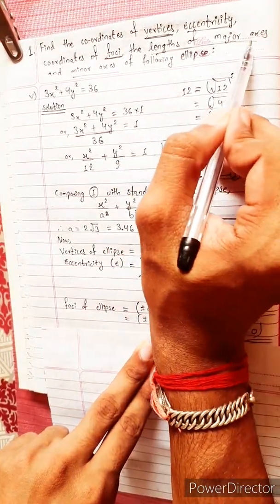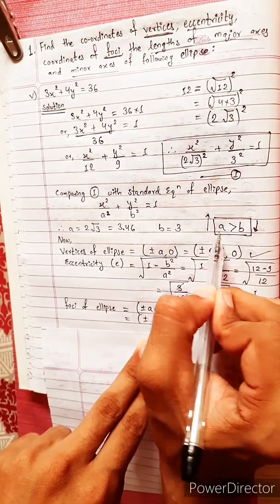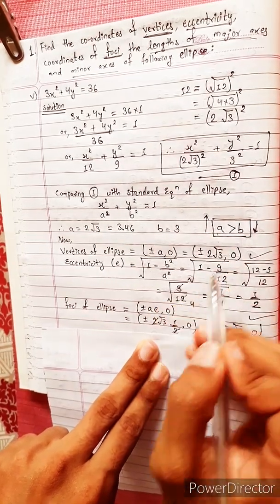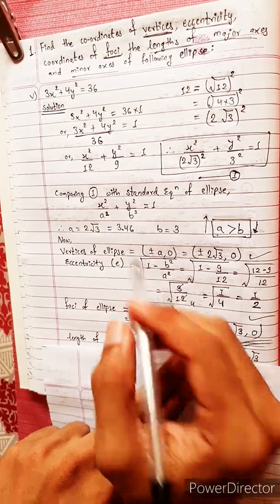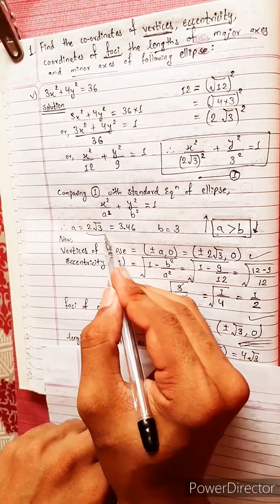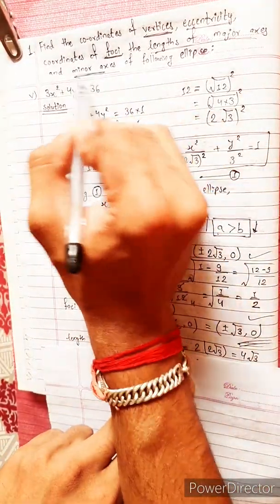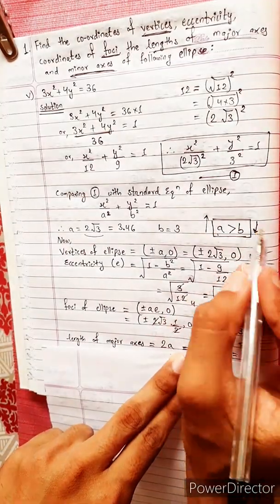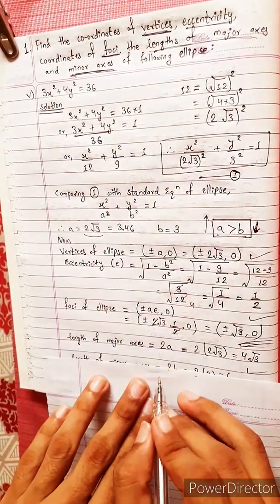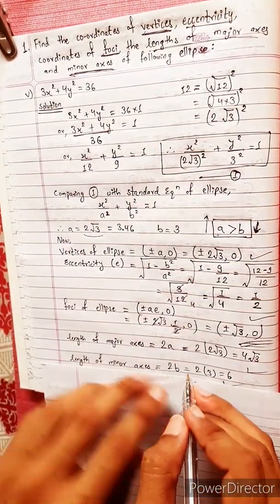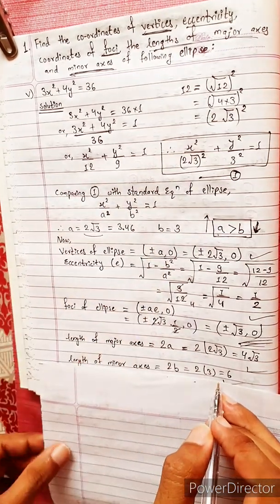Length of major axis equals 2a. Here a equals 2√3, so length of major axis equals 2 into 2√3 equals 4√3. Length of minor axis equals 2b. Here b equals 3, so length of minor axis equals 2 into 3 equals 6.